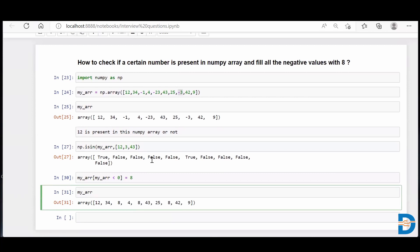So this is how, you know, if you want to check presence of a certain number, you can use your isin functionality of NumPy. And let's say you have to fill negative values with a certain number. Simply you can put a condition, a logic, and with the logic you can filter out all the numbers which is having a value less than zero and you can put any number in place of them. Thank you.